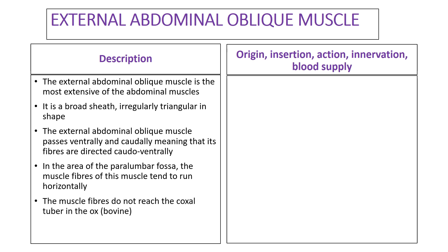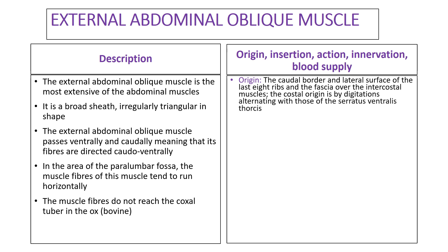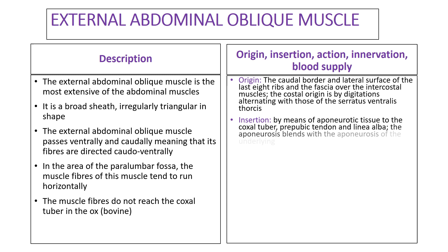The muscle fibers do not reach the coxal tuber in the ox, whereas in the goat the muscle fibers almost reach the coxal tuber. In terms of its origin, the muscle originates from the caudal border and the lateral surface of the last eight ribs and also from the fascia over the intercostal muscles. The costal origin is normally by digitations, and these digitations alternate with those of the serratus ventralis thoracis. The muscle inserts by means of aponeurotic tissue to the coxal tuber, the prepubic tendon, and the linea alba. The aponeurosis of this muscle blends with the aponeurosis of the underlying internal abdominal oblique muscle.